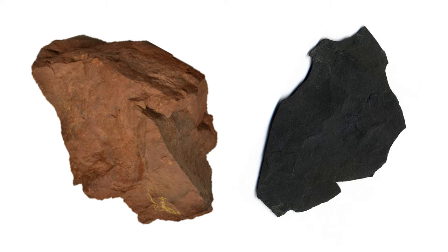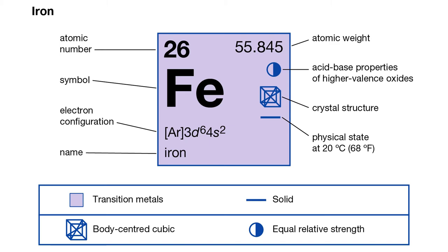Take, for example, these rocks. Both of these rocks are considered mudstones or shales, but only one of them is black. Clearly, not all shales are black. Instead, the colors of many sedimentary rocks depend on their compositions — specifically, the chemistry of their minerals that contain iron.